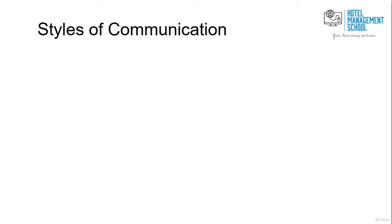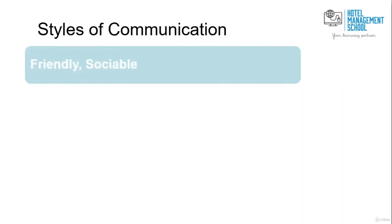There are different styles of communication. We can categorize all the styles of communication into four or five parts. The first is friendly, which is sociable — it happens between friends, parents, and families, so these are more relaxed communications for sharing information, opinions, and other things within a friend circle. These are not formal most of the time.